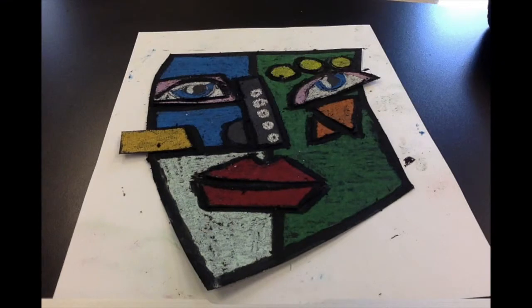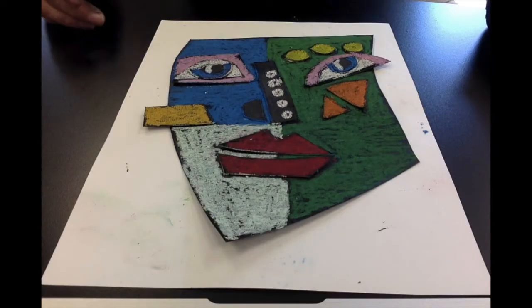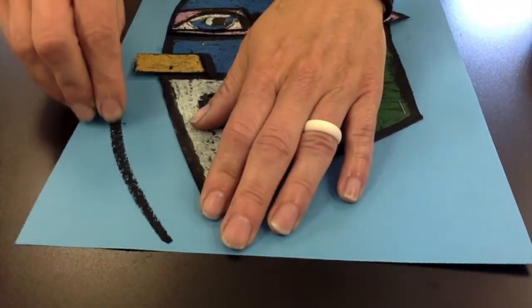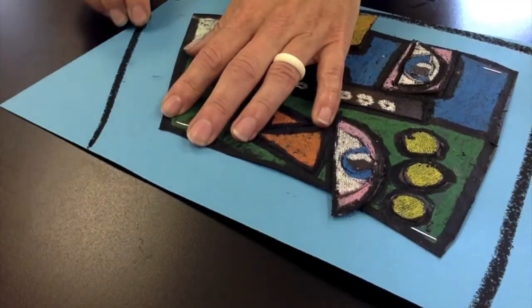Look at the difference between this and without the black oil pastel. I just love how it makes it stand out. So let's go ahead and start matting our work. Now that I've got everything outlined in black, I'm going to staple it onto a piece of construction paper that can be used as my frame or mat.